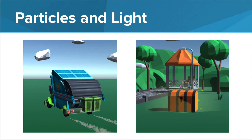In addition to light, particles can provide helpful information and feedback to players. For example, players can assume that the truck on the left is obviously moving faster when more dust particles get stirred up from the back wheels. Particle systems and lighting effects can be combined to create a more visual signpost for players, like with the treasure chest on the right.